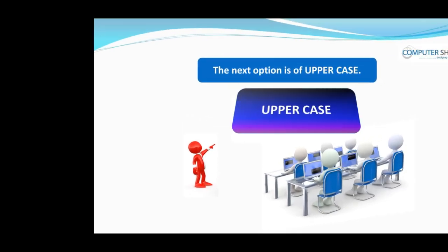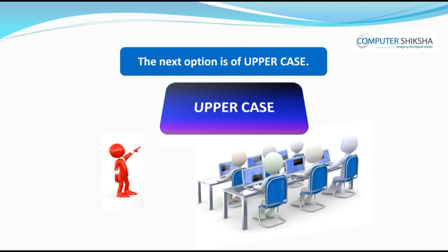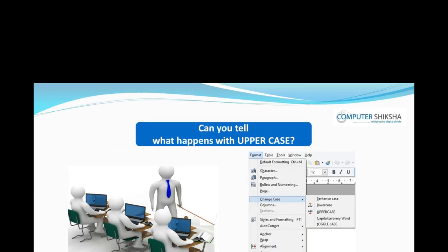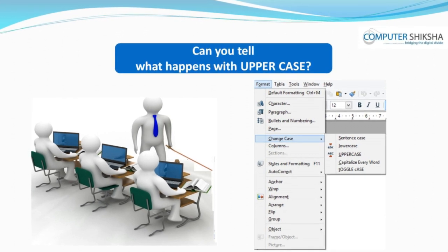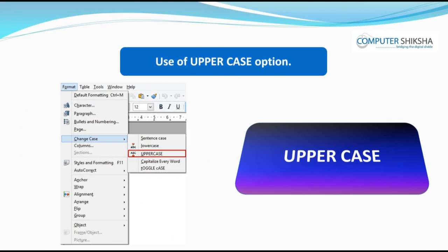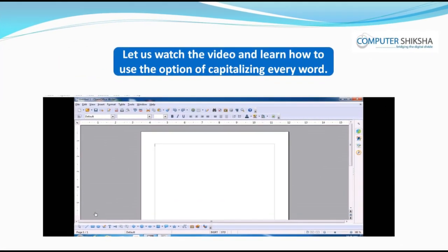The next option is Uppercase. Can you tell what happens with Uppercase? With Uppercase, you can change all the letters of the line or paragraph to uppercase, which means they will all appear in capital letters. Let us now watch the video to learn about the usage of Uppercase.